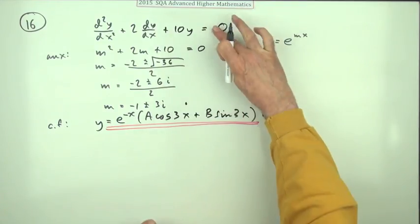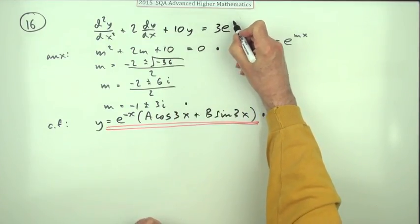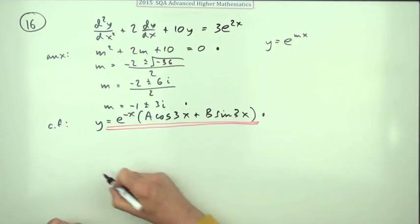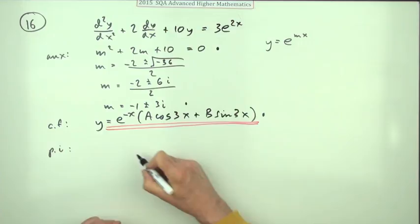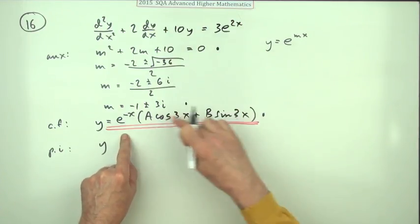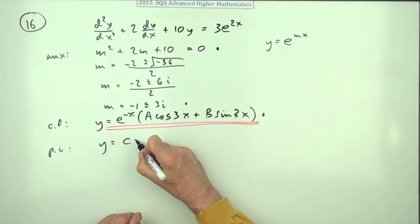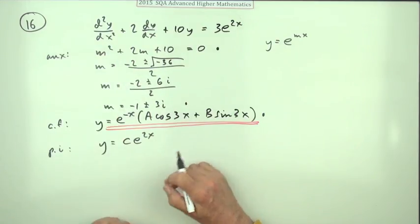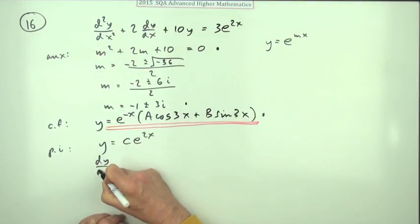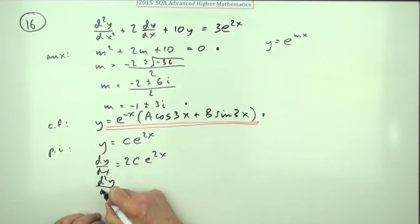Well that was the complementary function, so back to what was on the other side. I'm looking for the particular integral now. What would produce this? Well I haven't got any of those so far, so that's completely clean. So I can just try a simple c e to the 2x, see if that works. Rattle that through this, so I need dy by dx which will just be 2c e to the 2x, the second derivative which will be times 2 again, 4c e to the 2x.